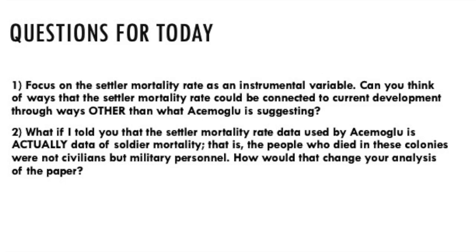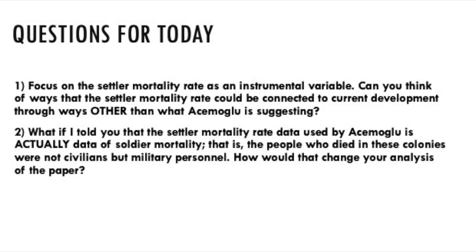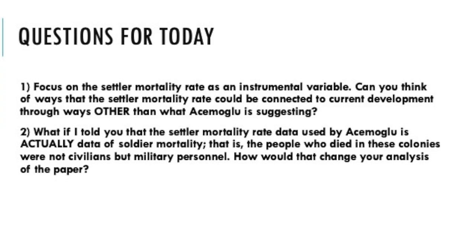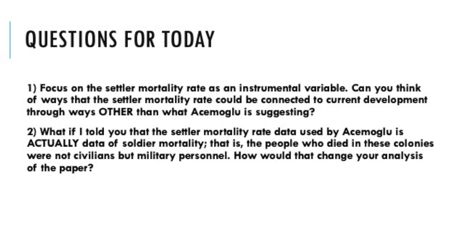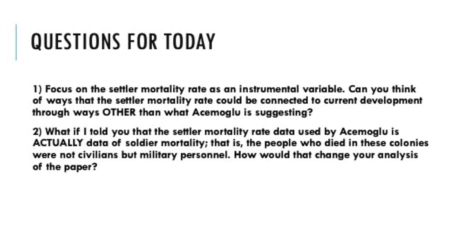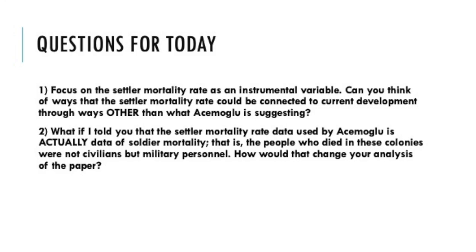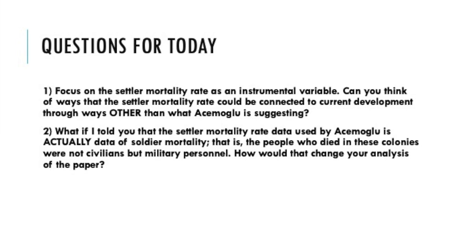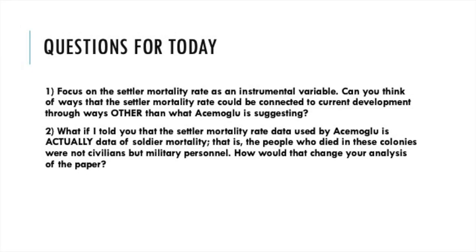In the next video, I will be discussing ways via which other people have criticized Acemoglu's approach. For now, I want to leave you with today's questions. Number one: focus on the settler mortality rate as an instrumental variable — can you think of ways that the settler mortality rate could be connected to current development through ways other than what Acemoglu is suggesting? Number two: what if I told you that the settler mortality rate data used by Acemoglu is actually data of soldier mortality? That is, the people who died in these colonies were not civilians but military personnel. Would that change your analysis of the paper and its interpretations? I look forward to hearing your comments in the discussion forum.